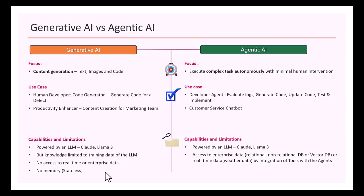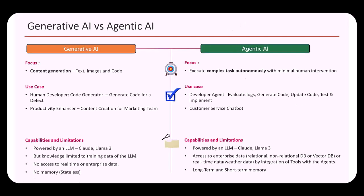Large language models are stateless — they have no memory by default. In generative AI applications you can enable memory, for example through LangChain's conversation buffer memory, but it's not native. In agentic AI, you have both long-term and short-term memory built in to contextualize and personalize responses to the user.